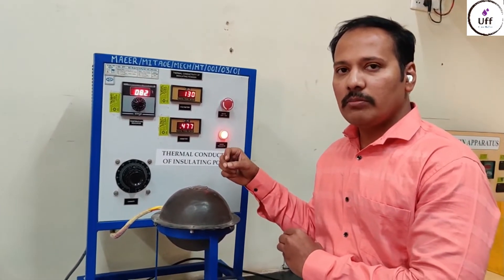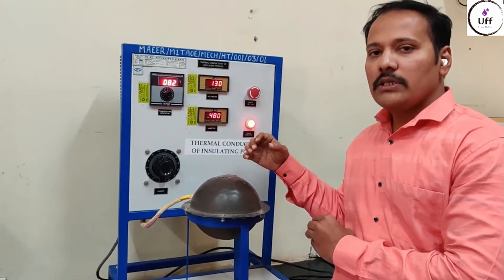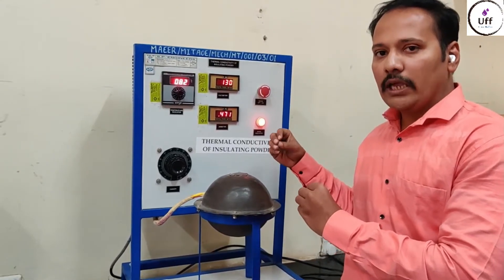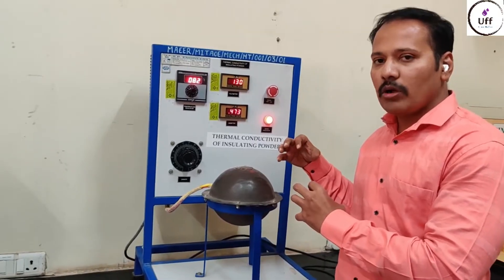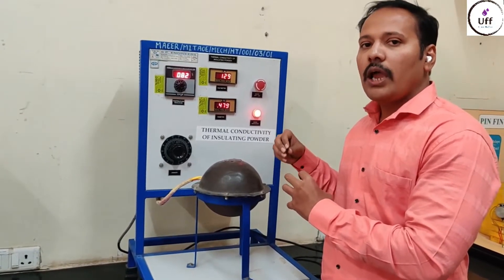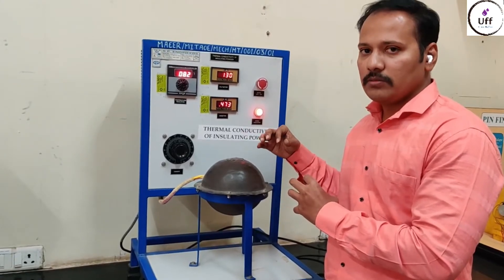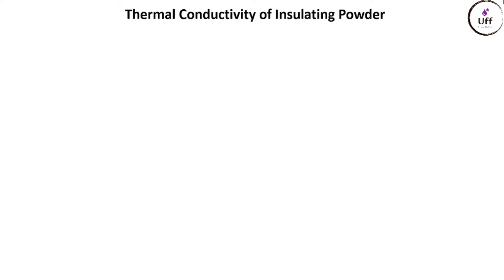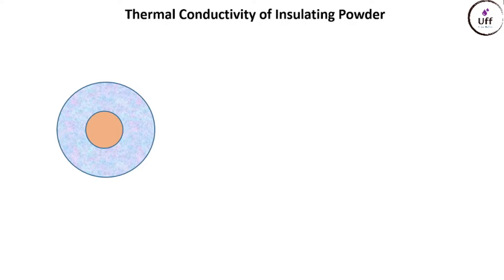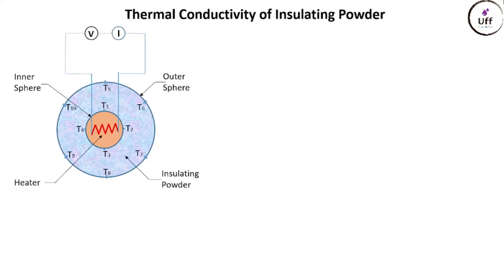Why take so many temperature readings instead of just one on each side? This is to improve accuracy. We use four thermocouples on the inner sphere and six thermocouples on the outer sphere. To summarize the geometry: the two concentric spheres have insulating powder in between, the inner sphere has a heater connected via voltmeter and ammeter, with T1–T4 on the outer surface of the inner sphere and T5–T10 on the inner side of the outer sphere.